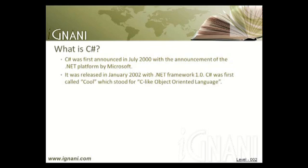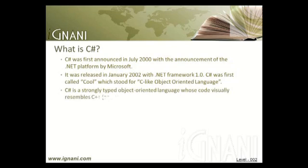C-Sharp was first called COOL, which stood for C-like Object-Oriented Language. C-Sharp is a strongly typed object-oriented language whose code visually resembles C++ and Java. This decision by the C-Sharp language designers allows C++ developers to easily leverage their knowledge to quickly become productive in C-Sharp.